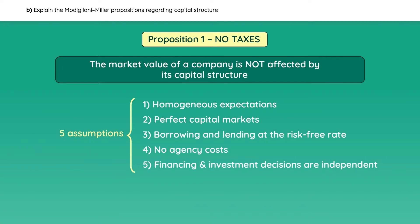If all of these assumptions are true, the value of a levered firm is exactly the same as an unlevered firm, because the choice of capital structure has no effect on the value of the company. The reason why is explained by proposition number 2.